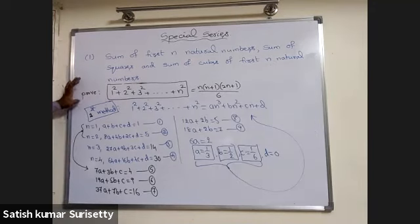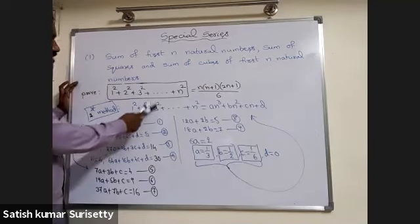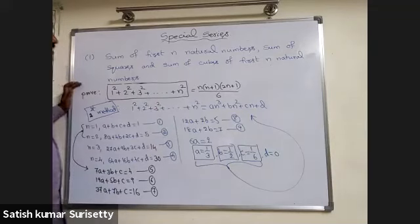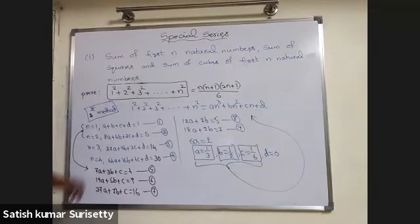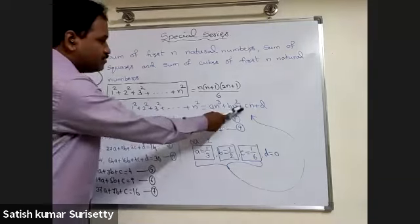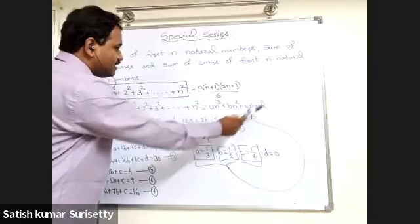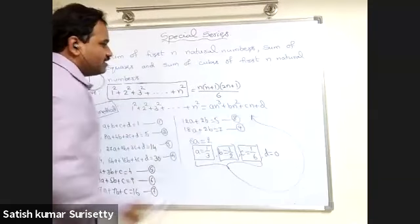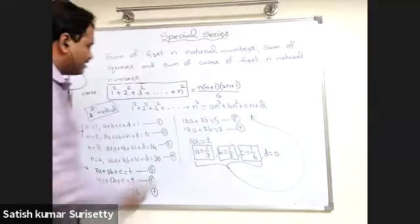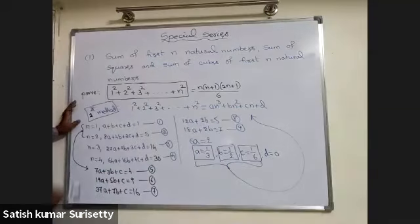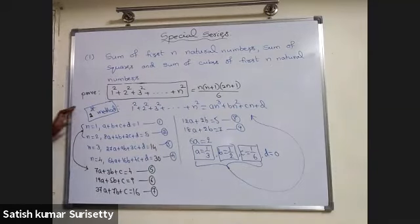The second method: 1 squared plus 2 squared plus 3 squared and so on n squared is a cubic polynomial. So write the general form of a cubic: a n cubed plus b n squared plus c n plus d. We need to calculate four constants a, b, c, d. Substitute n equal to 1, 2, 3, and 4 to form four equations.